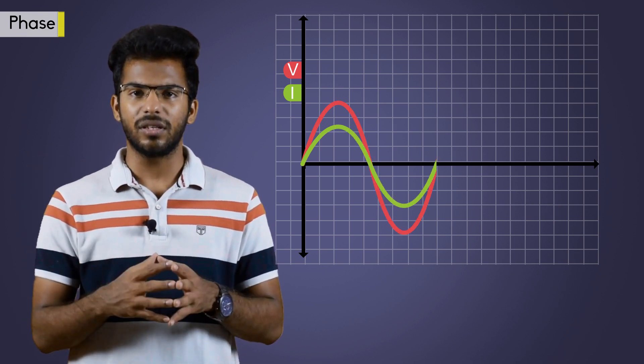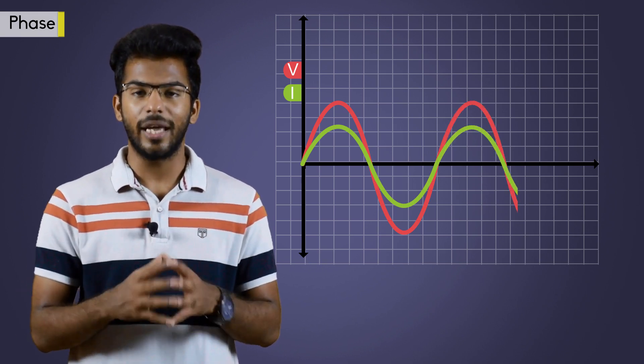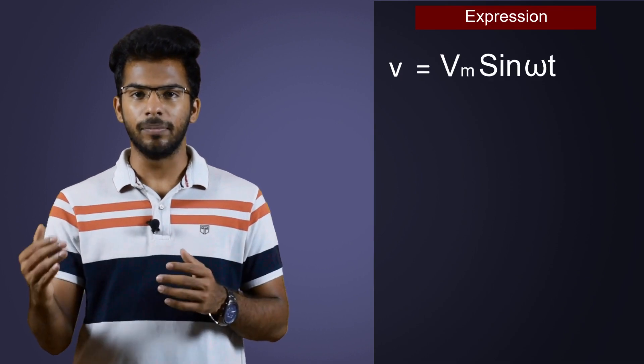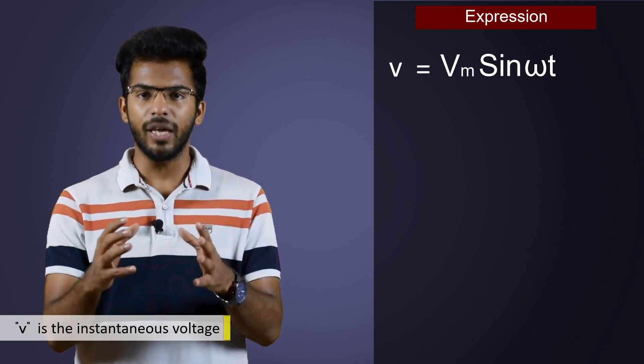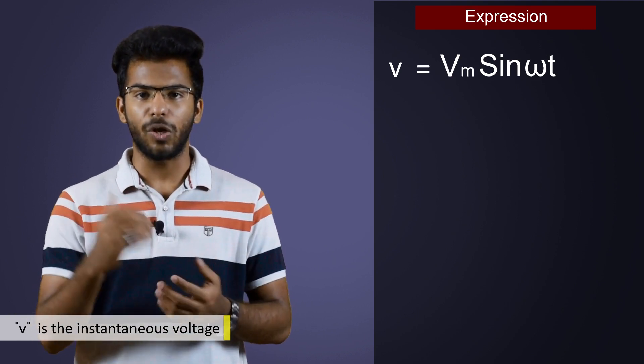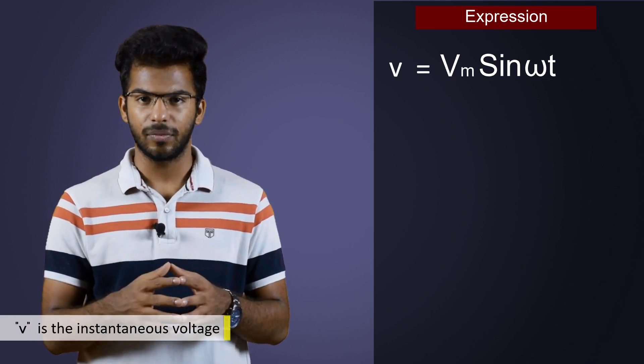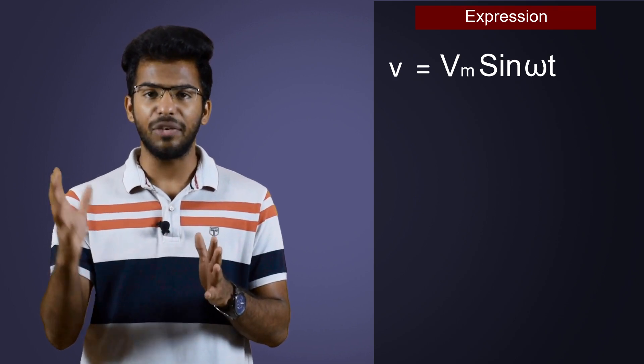Along with this, we should also learn about few important equations which helps us in understanding these kinds of circuit better. The first one being the expression for voltage. It's given as V is equal to Vm sine omega t. V is the instantaneous voltage. Vm is the maximum or peak voltage. This is the expression for alternating voltage. Sine term in the expression conveys that it follows a sine wave function.